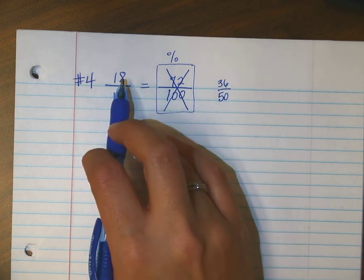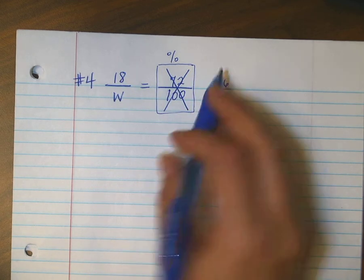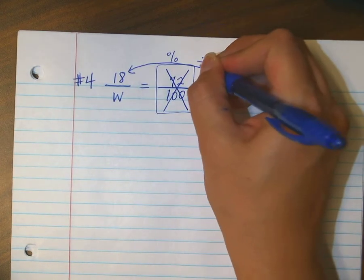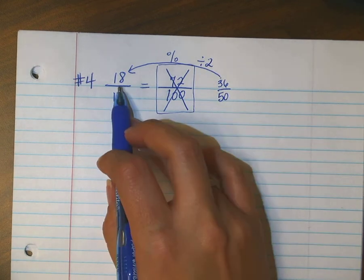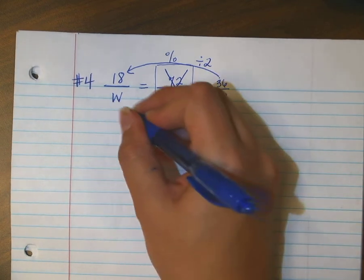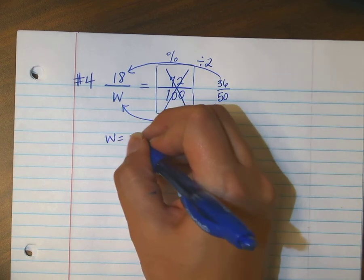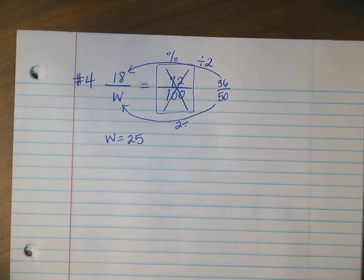So what's the opposite? Wait, wait, hold on. Opposite of multiplying by 2 would be dividing by 2. So from here to here needs to be dividing by 2. 36 divided by 2 gives me 18. So 50 divided by 2 gives me W equals 25. I'm impressed. That was pretty good.